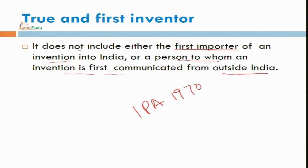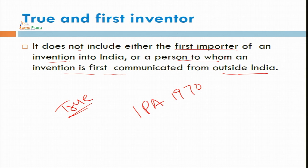The true and first inventor is the person who has invented that particular invention in India. He can also authorize some other person, but the main thing is the person who invented that thing — that scientist, that pharmacy person, or any other person, any citizen of India or even any other person. It is not necessary that the person should be a citizen of India. Any person can file a patent in India if he has invented something which fulfills the criteria and essentials of patents.